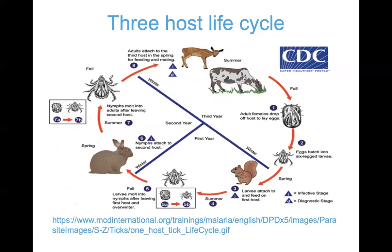In the three-host cycle, during fall the tick attaches to a host in spring, mates, then falls off in summer when the adult begins to lay eggs. The eggs hatch into larvae which infect another host, continuing the same life cycle before moving to a third host. This allows the tick to move between large animals, squirrels, and rabbits, transmitting diseases across different animal species.